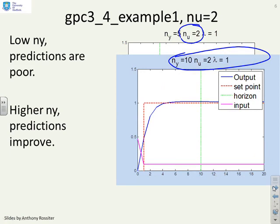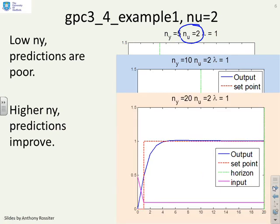If I increase the horizon a bit further, and here you'll see the output horizon has now gone to 10, things are looking a little bit better. With nu equals 2 and ny equals 10, I've got a prediction that I'd be quite comfortable with, and you might argue that any optimisation there is probably reasonably well posed. If I go to 20, things get even better. You can see the steady state error has almost disappeared altogether.